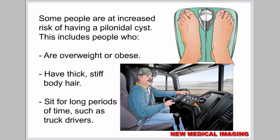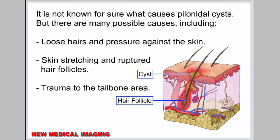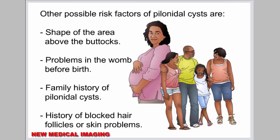Some people are at an increased risk of having a pilonidal cyst, including people who are overweight or obese, have thick stiff body hair, or sit for long periods of time, such as truck drivers. It is not known for sure what causes pilonidal cysts, but there are many possible causes including loose hairs and pressure against the skin, skin stretching and ruptured hair follicles, and trauma to the tailbone area. Other possible risk factors include the shape of the area above the buttocks, problems in the womb before birth, family history of pilonidal cysts, and history of blocked hair follicles or skin problems.